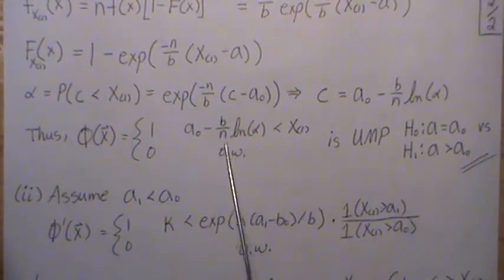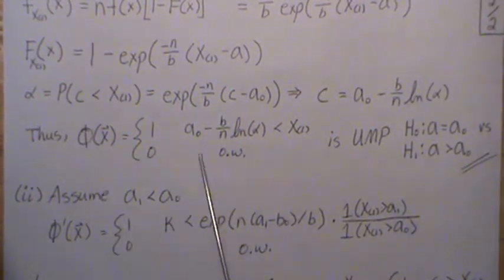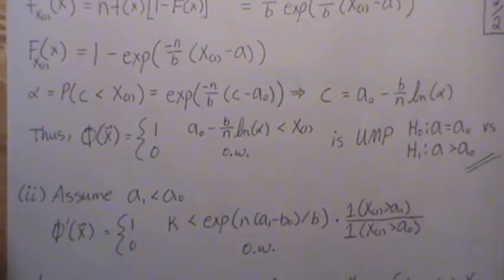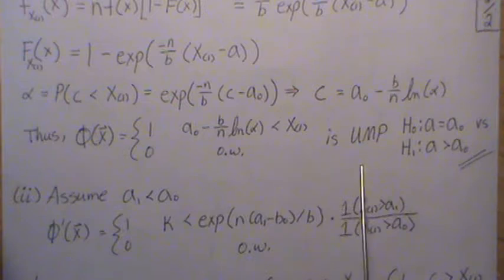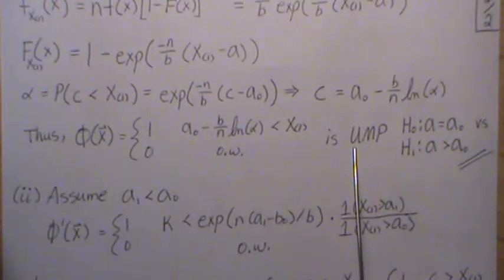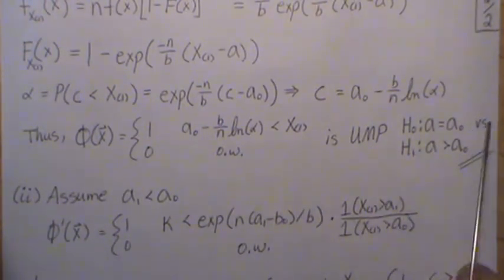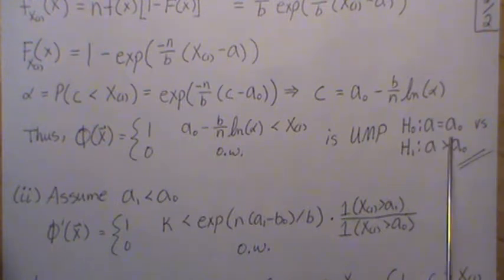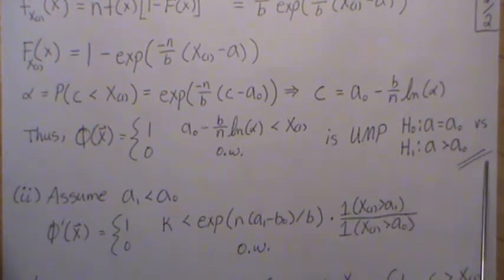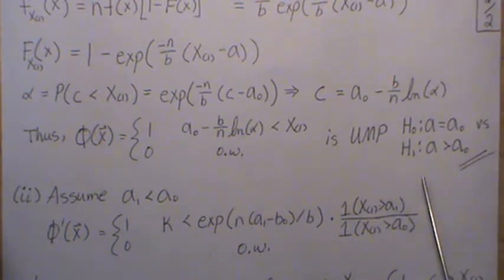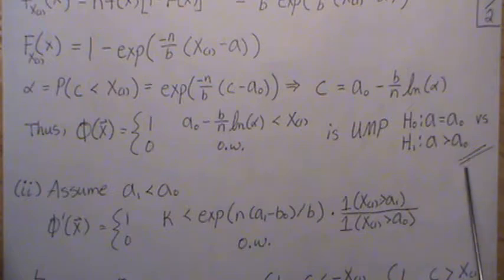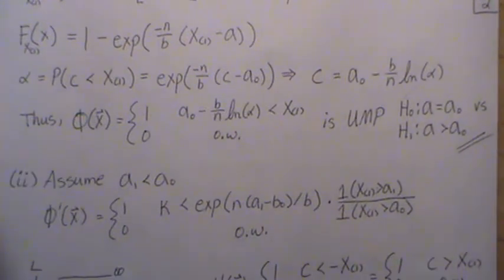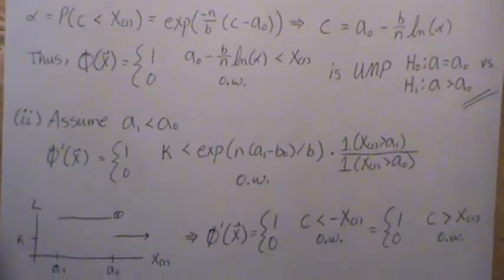Notice there is no A1 in the cutoff expression. So the arbitrarily chosen A1 doesn't impact the rejection region. This means it's actually uniformly most powerful for the hypothesis that A equals A-naught versus A is greater than A-naught.